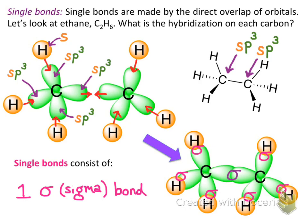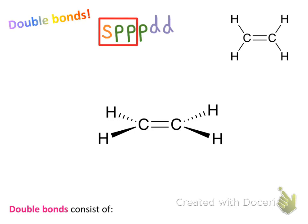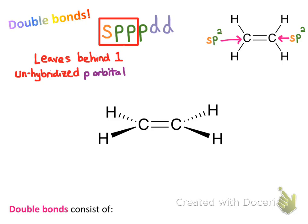Let's look at ethylene, which has a carbon-carbon double bond. Each carbon has three electron domains — using our rule, each is sp2 hybridized. Recall that sp2 hybridization leaves behind one unhybridized p orbital per carbon. So what does that p orbital do? Let's take a closer look.